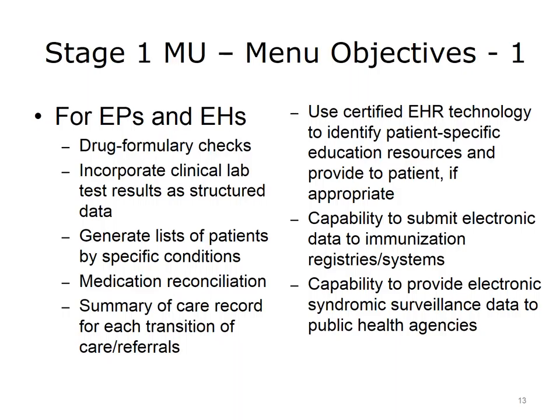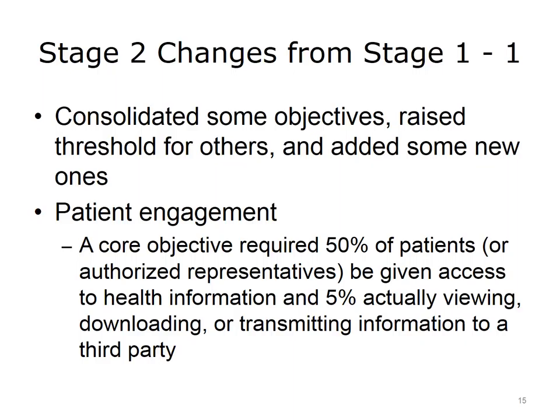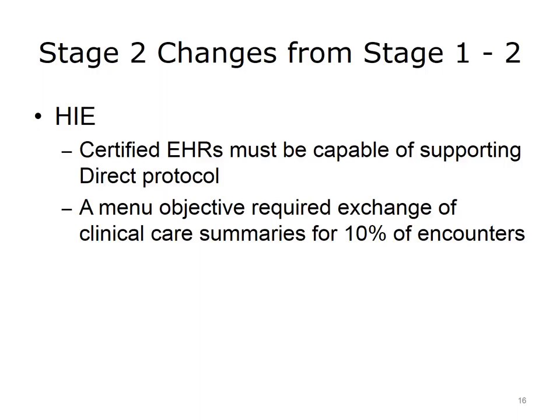This slide lists the menu objectives for Stage 1. Objectives common to both eligible professionals and eligible hospitals are at the top of the list, followed by a couple specific to eligible professionals and another couple specific to eligible hospitals. Moving on to Stage 2, some objectives were consolidated, some thresholds were raised, and seven objectives were added around patient engagement and health information exchange. One new core objective required that 50% of patients or their authorized representative be given access to health information, and of those, 5% had to view, download, or transmit health information to a third party. For health information exchange, the certification process required supporting the direct protocol of point-to-point secure transmission, and a new menu objective required the exchange of clinical care summaries for 10% of all patient encounters.